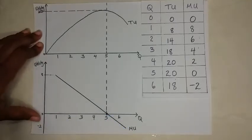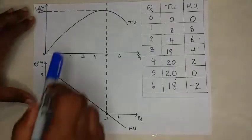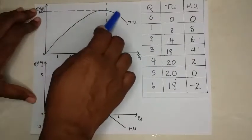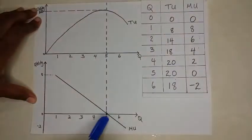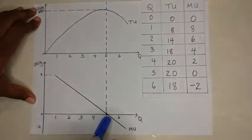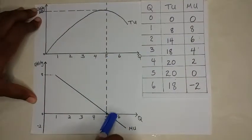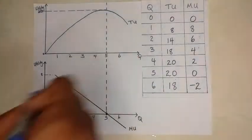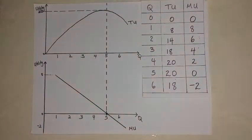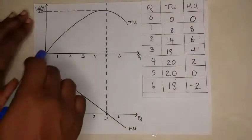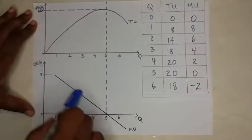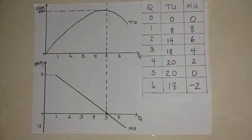So utility would be maximized at such a point here. TU would be maximized. And at this point, we have satiation. So both graphs are showing the same thing, but this one would be looking at TU and this one is MU.